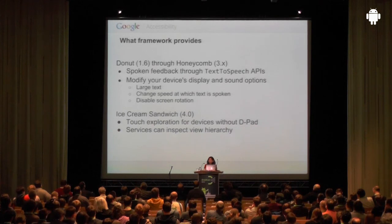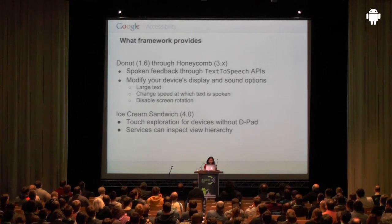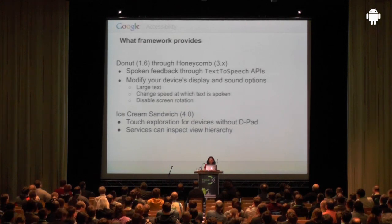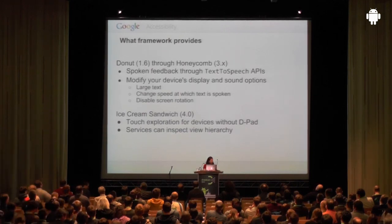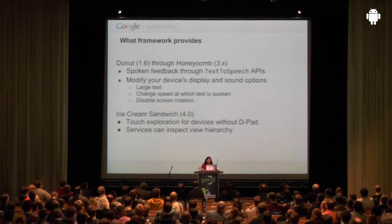For people with motion impairment who cannot touch the screen very fast, you can increase the time between double taps. However, many new devices are touch-screen only without a physical keyboard or trackball. While you could attach a USB or Bluetooth keyboard, we wanted to do something better. So in Ice Cream Sandwich, we added touch exploration — when you touch the device, whatever is below your finger provides spoken feedback. Do you think there is any problem with touch exploration?